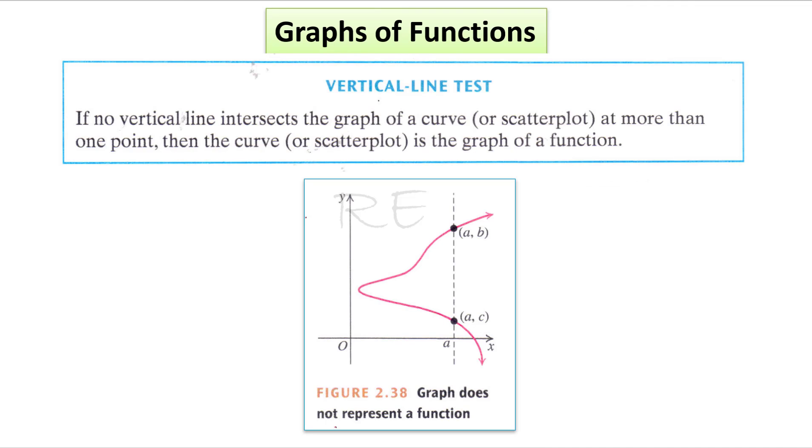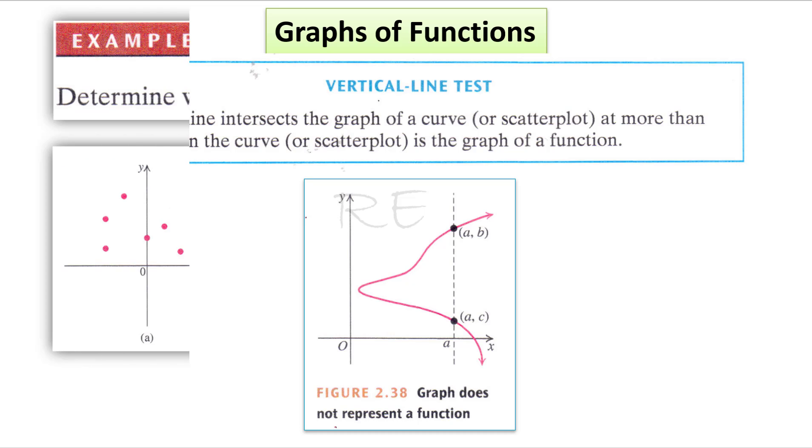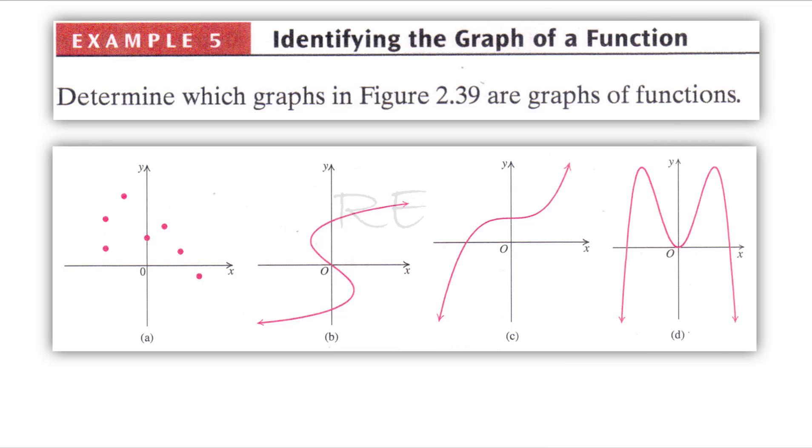The vertical line test: If no vertical line intersects the graph at more than one point, the curve is the graph of a function. For the first problem, if we understand the scatterplot to be a set of connected points, when we draw the vertical line we'll have two intercepts. Therefore, one x will have two images. This is not a function.